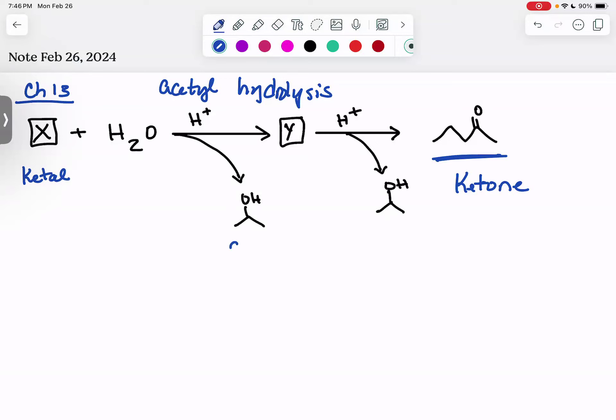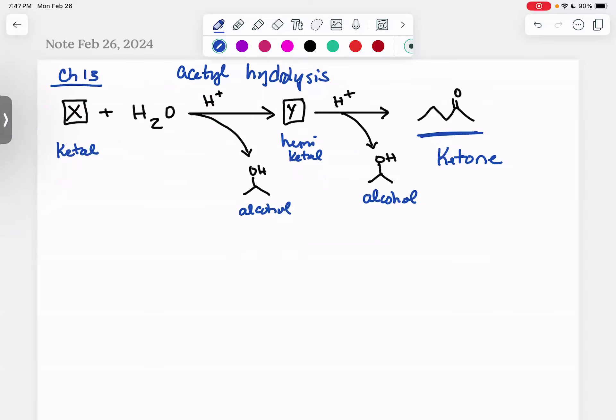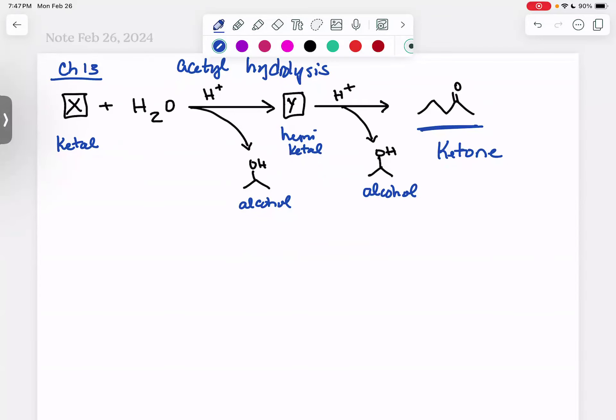You cleaved off an alcohol and made a hemi-ketal. Then you cleaved off another alcohol and made a ketone. So basically, you have to write this reaction in reverse. Let's do that. We're going to start with our ketone.